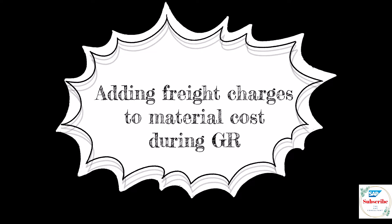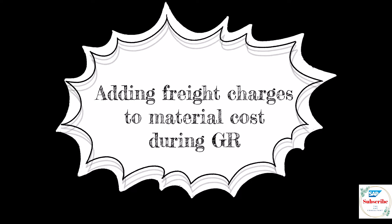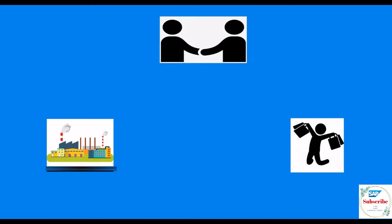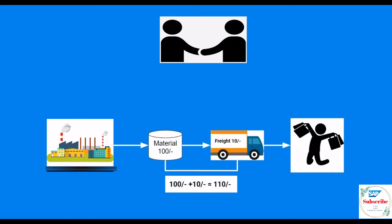The first scenario is adding freight charges to the material cost during goods receipt and settling the transport vendor. There is a business need where freight charges have to be added to the material cost. For example, purchase cost of the material is 100 rupees and freight charges incurred during transportation is 10 rupees. In this case, total material cost will be 110 rupees by adding freight charges to the material cost.